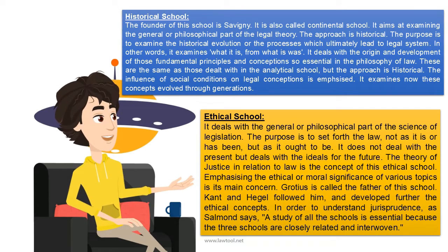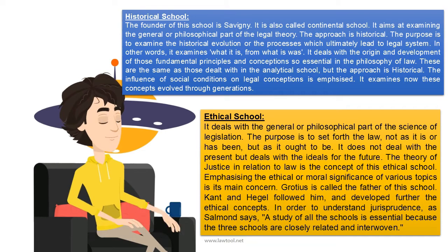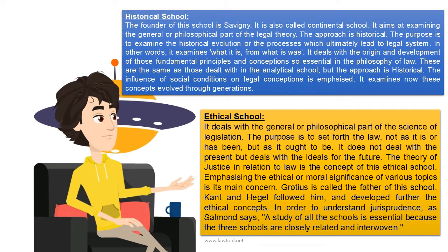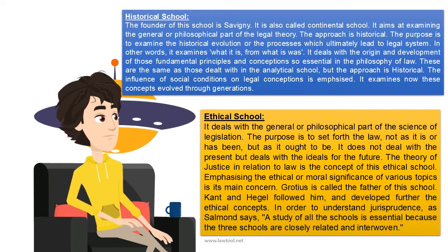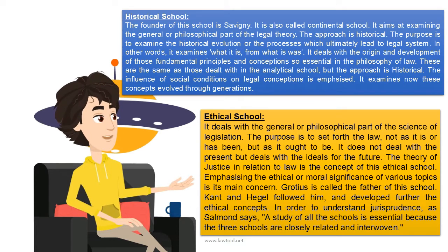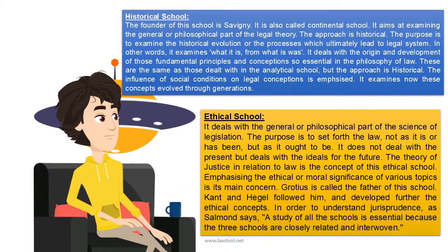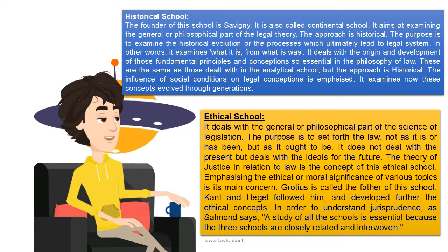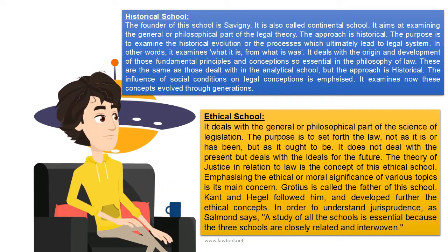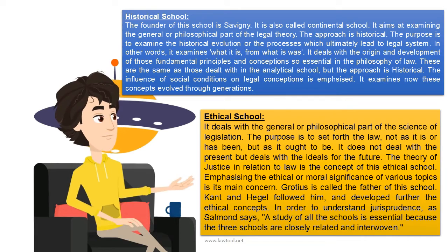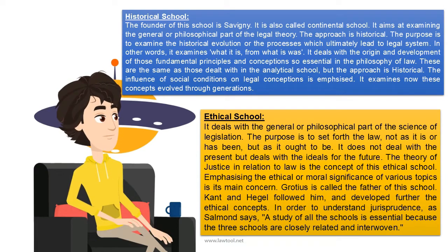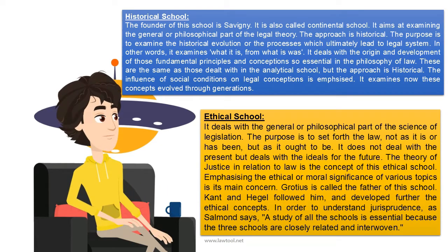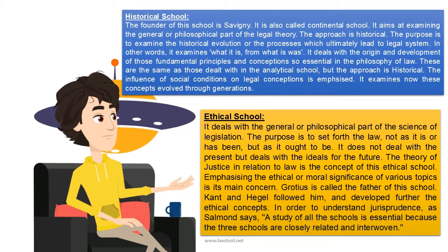The historical school — also called the continental school — was founded by Savigny. It aims at examining the general or philosophical part of legal theory. The approach is historical; its purpose is to examine the historical evolution and the processes which ultimately lead to the legal system. In other words, it examines what the law is from what it was. It deals with the origin and development of fundamental principles in the philosophy of law, emphasizing the influence of social conditions on legal conceptions, and examines how these concepts evolved through generations.